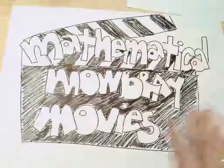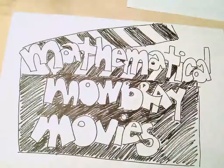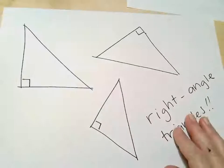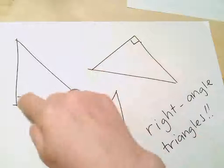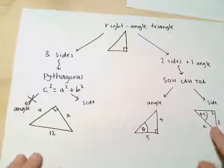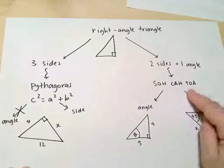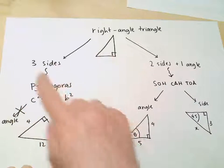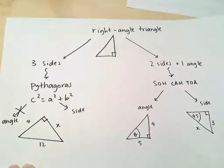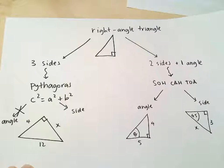Hey Year 12 and welcome to the next episode of Mathematical Mowbray Movies. So far in trigonometry we've only looked at right angle triangles, ones that have got the little symbol for a right angle in the corner, and we've used Pythagoras and SOHCAHTOA to perform various calculations, depending on what we know and what we're trying to calculate.